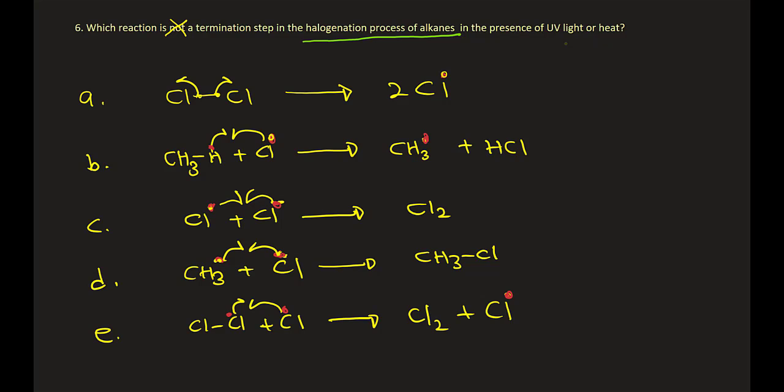Let's look at the last question. Which reaction is a termination step? Termination step should have two radicals going into a neutral. That's the way you're going to look at it. Not the complicated drawings of molecules. Just look for two radicals going into neutral. So here, the first one, neutral going to two radicals. It's an initiation. That's out.